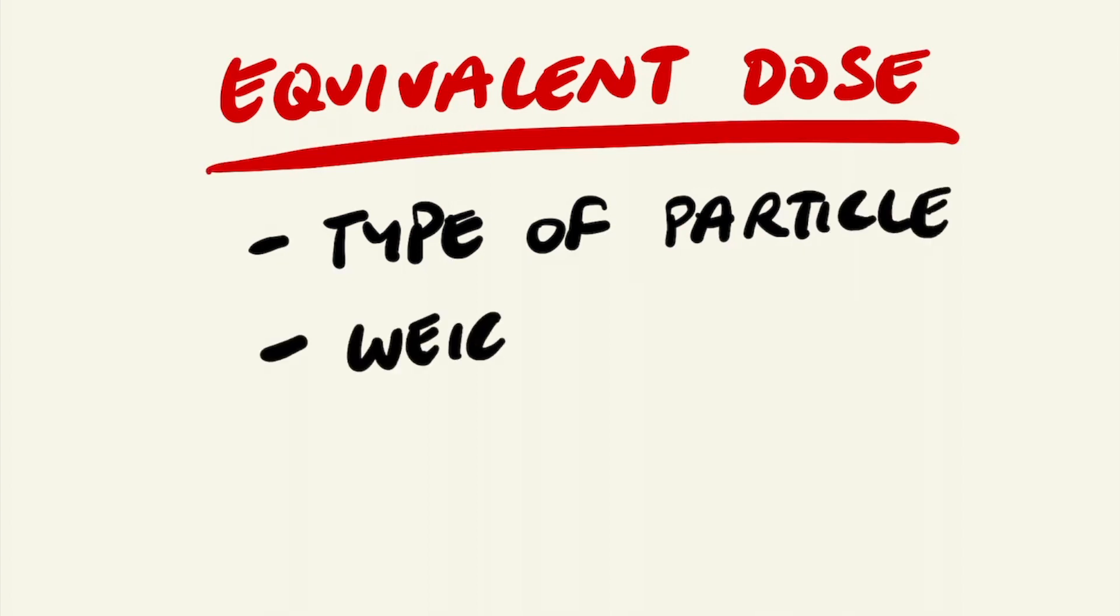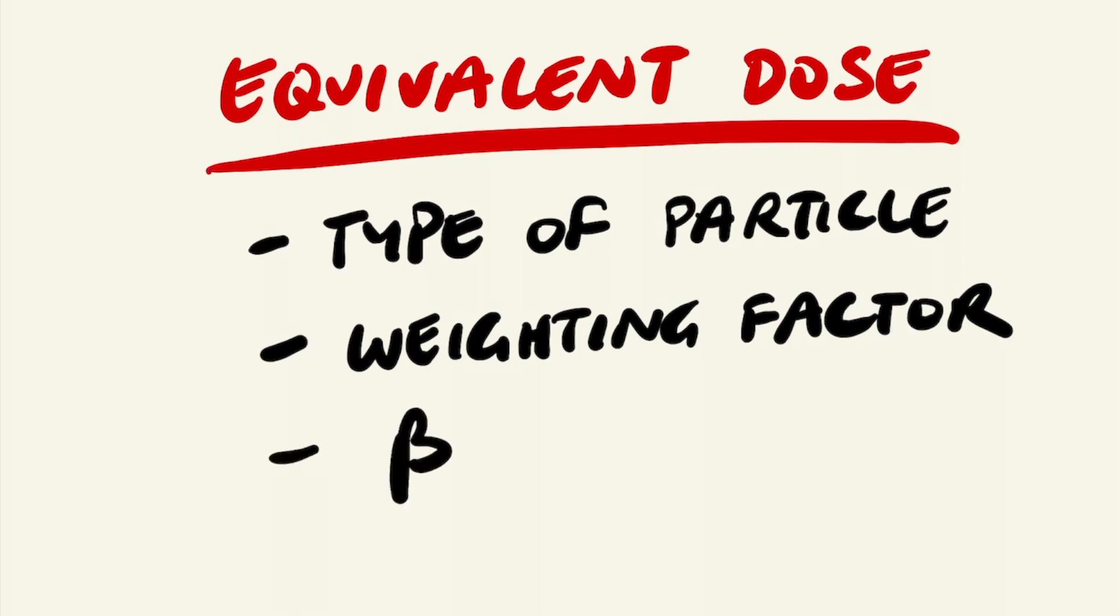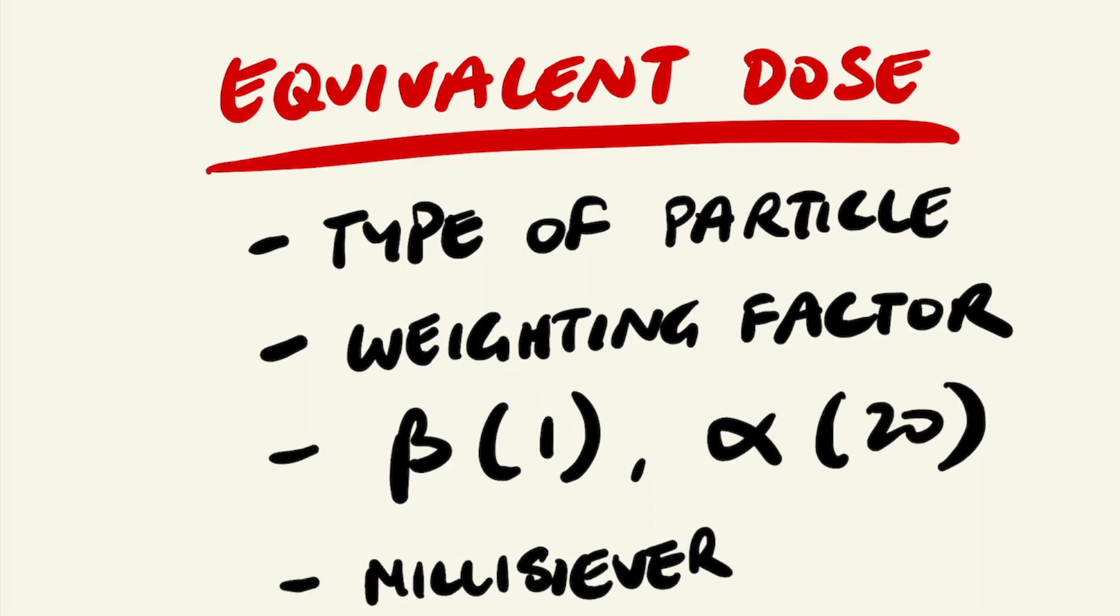This uses a weighting factor which represents the biological effectiveness of that type of radiation in inducing health effects. For beta particles this weighting is 1, whereas alpha particles the weighting is 20. This is measured in millisieverts.